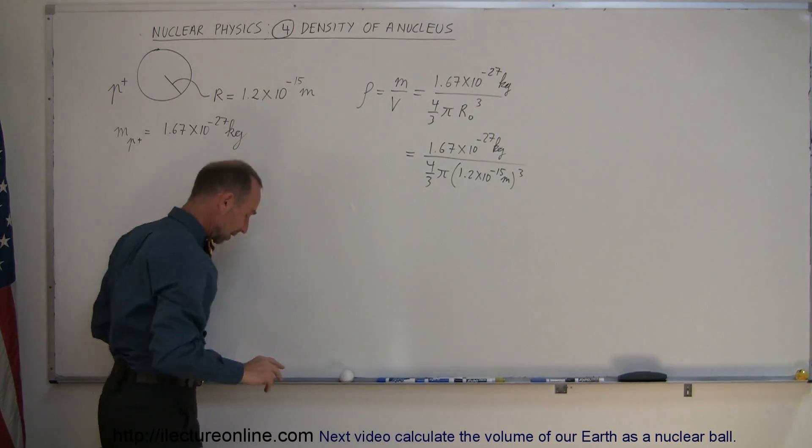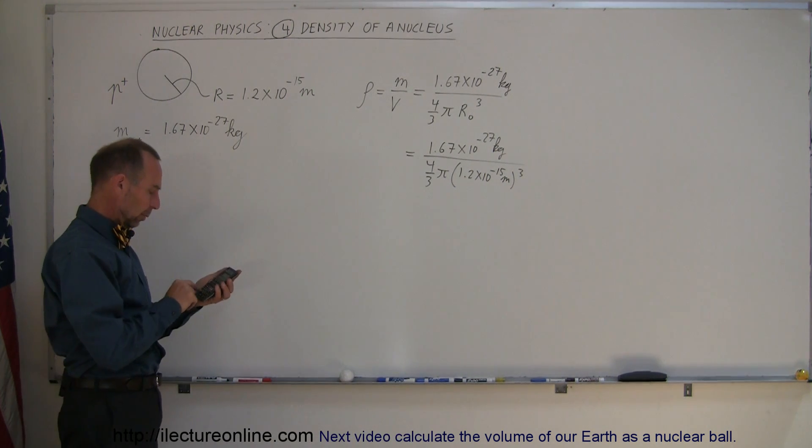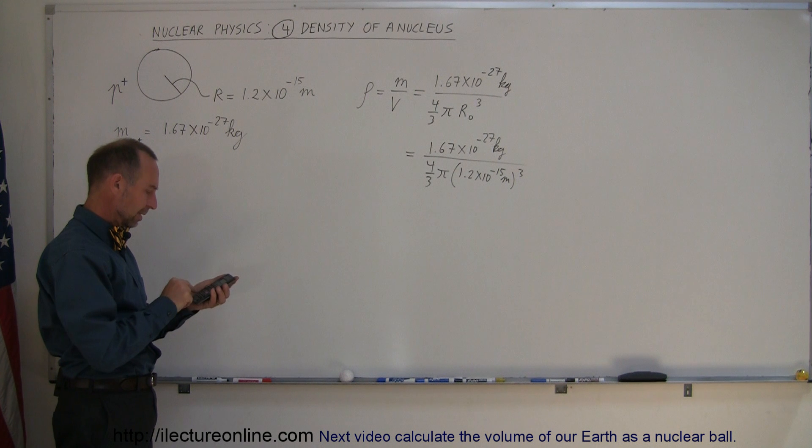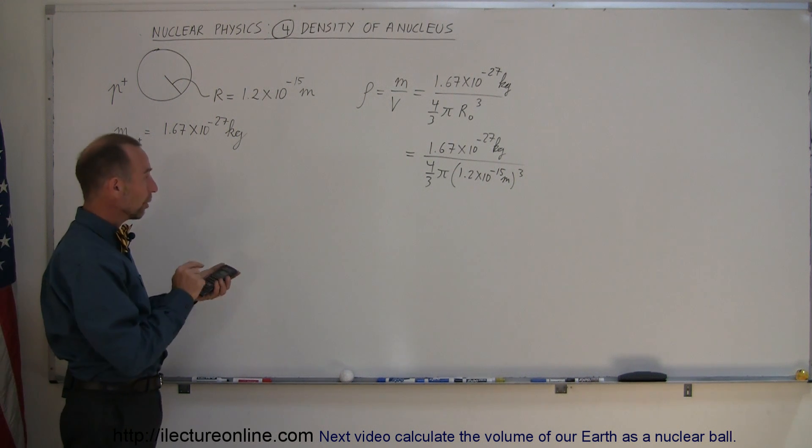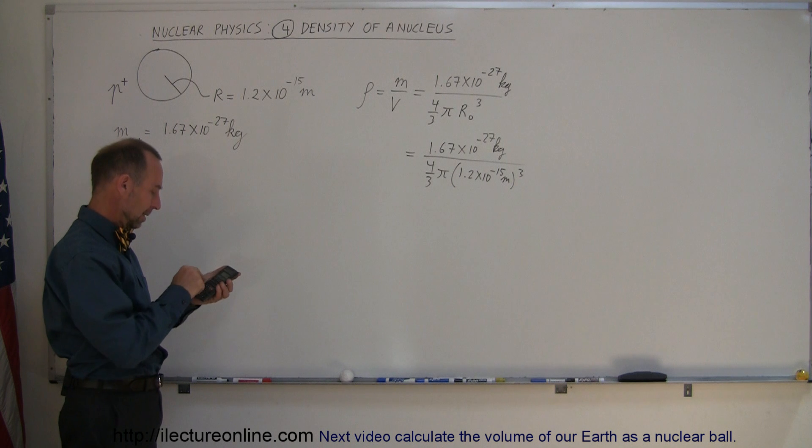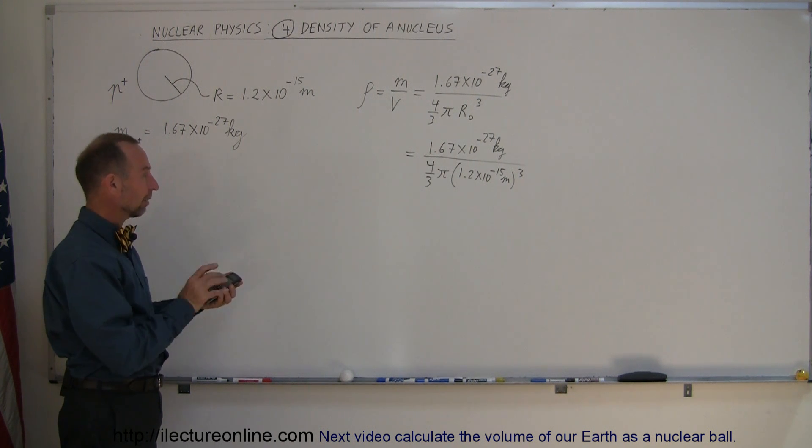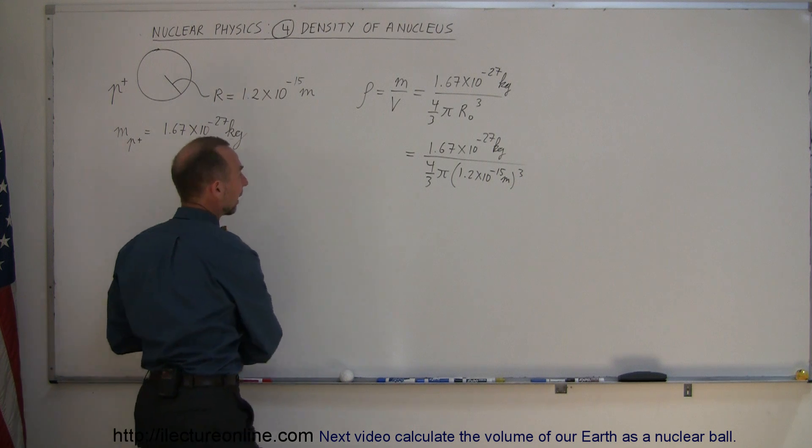Let's see what that is equal to. Starting out with 1.2 e to the 15 minus, raise that to the third power, multiplying that times pi, multiply times four, divide by three, that's the volume. I might as well write that down.